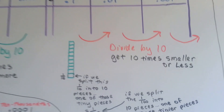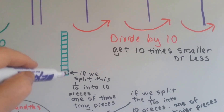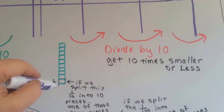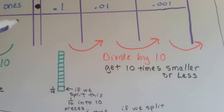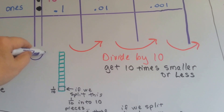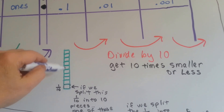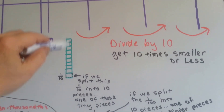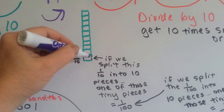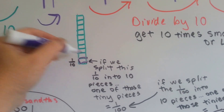If we had this bar, let's say it equals one. And I split this one into tenths — into ten little pieces — so that this little piece right here was one tenth. That's one tenth.